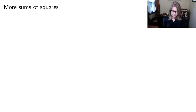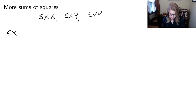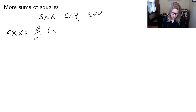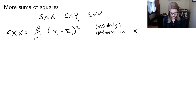I'd like to do just a little bit more notation, and this is going to be more sums of squares. The notation for these three things: we've got S_XX, S_XY, and S_YY. So S_XX is the sum from i equal one to N of X_i minus X_bar squared. This is essentially the variance in X — it would need to be divided by N to get back toward the variance of X, but it's very similar to that.